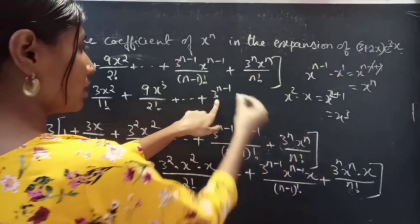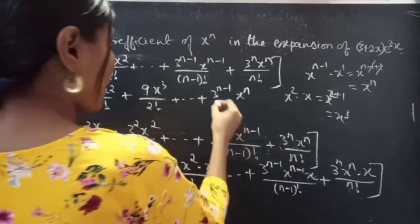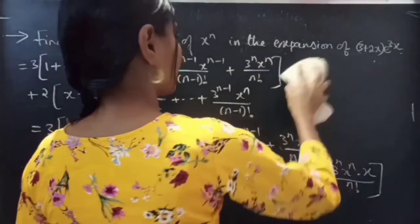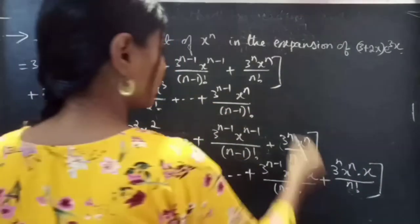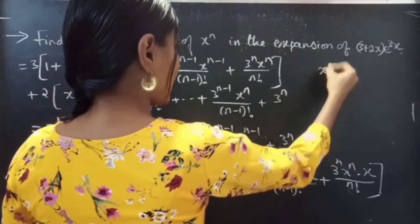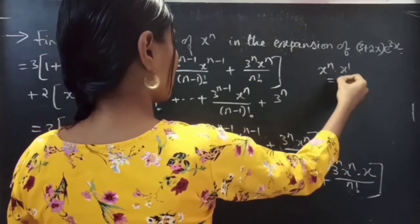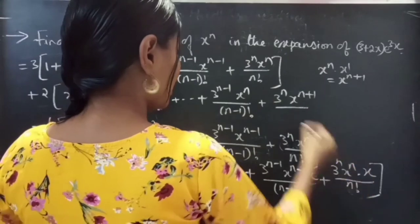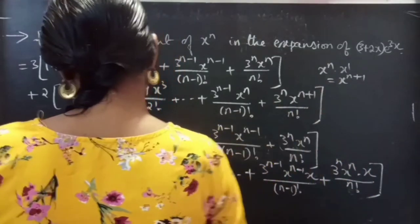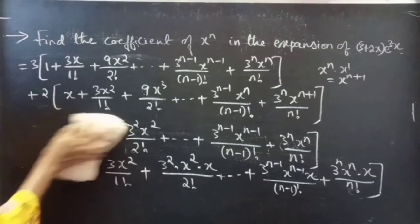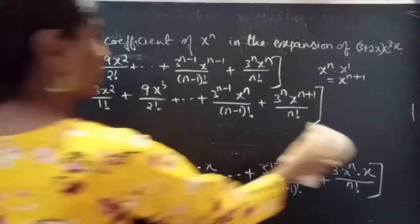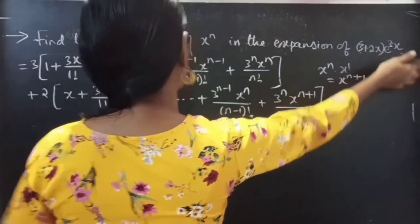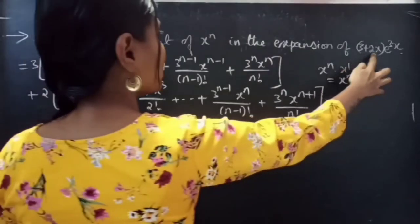So you will get 3 power (n minus 1) into x power n by (n minus 1) factorial, plus 3 power n into x power n into x which is x power (n plus 1) by n factorial. So here we are asked to find the coefficient of x power n in the expansion of (3 plus 2x) into e power 3x, and this is the full expansion of (3 plus 2x) into e power 3x.